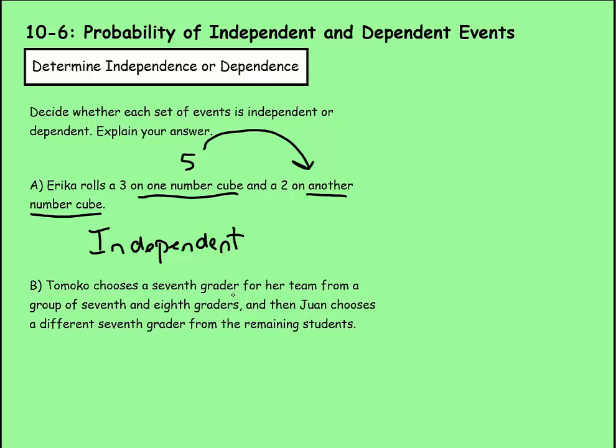Tomoko chooses a 7th grader from her team from a group of 7th and 8th graders, and then Juan chooses a different 7th grader from the remaining students. These two would be related because Juan cannot pick the person that Tomoko picked. For example, if we had three 7th graders and four 8th graders, if Tomoko picks this 7th grader, Juan cannot pick that 7th grader anymore. Juan would have to pick from the rest of these six, which has an impact on his choice. So these are not independent. They are dependent.